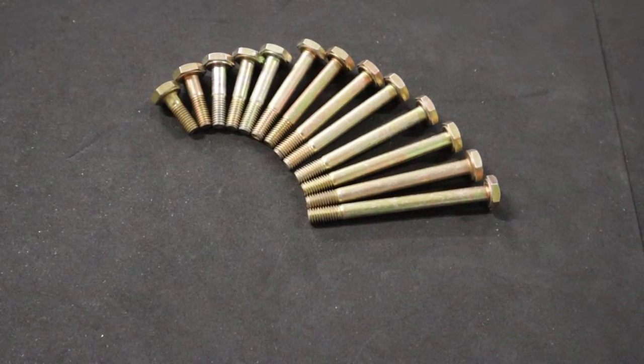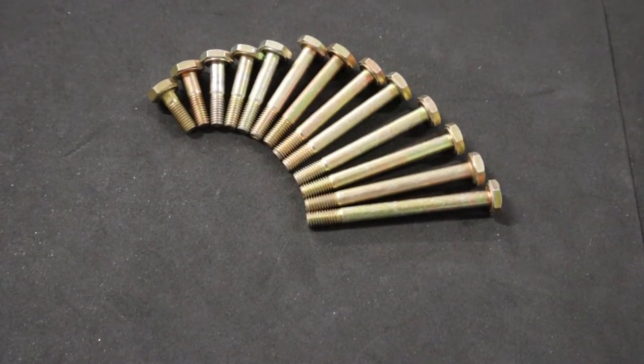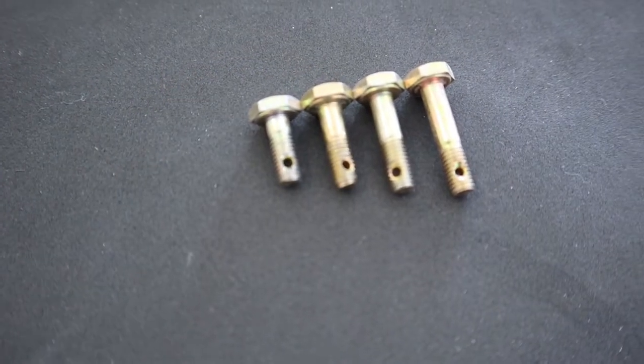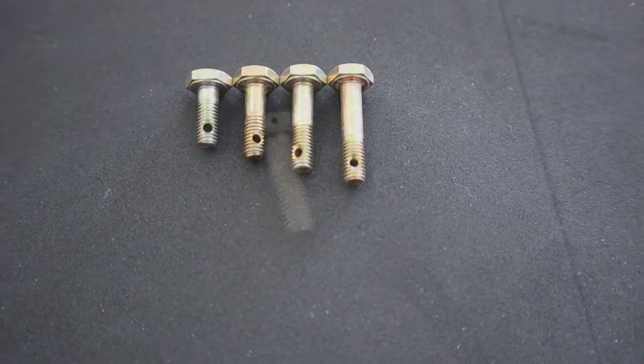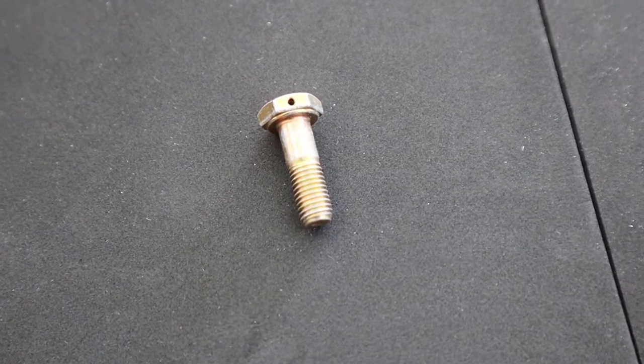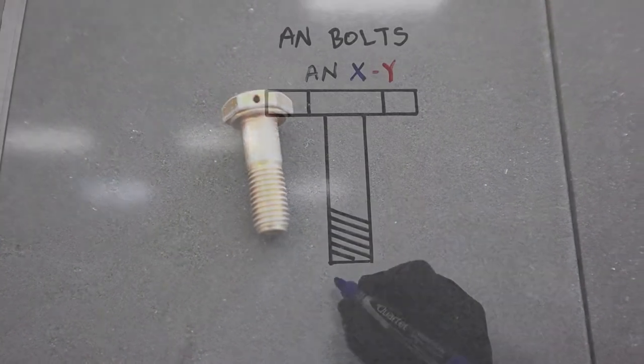And then on to bolts, you see that the threaded portion here is the length that doesn't matter what length the bolt is. If there's a hole in it, it'll have a little bit different designation, which I'll show you in a second. And if there's a hole in the head for safety wire, again, a different designation.